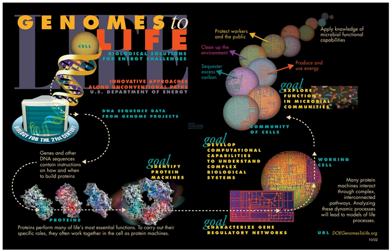One of the aims of systems biology is to model and discover emergent properties — properties of cells, tissues and organisms functioning as a system whose theoretical description is only possible using techniques of systems biology. These typically involve metabolic networks or cell signaling networks.